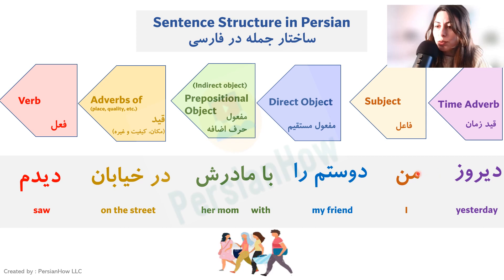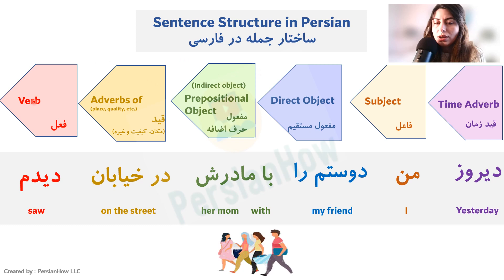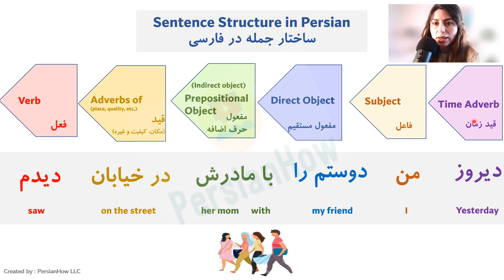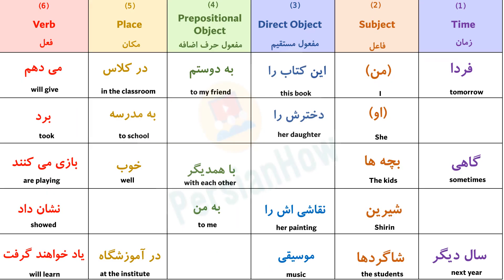The word order you see here is the general word order in Farsi. The good news is that this word order is also very flexible — it's not rigid or strict, except for one or two elements. The rest is pretty flexible, so you can play with it and move things around. We'll first take a look at a few other examples and then see how flexible we can be with this sentence structure.